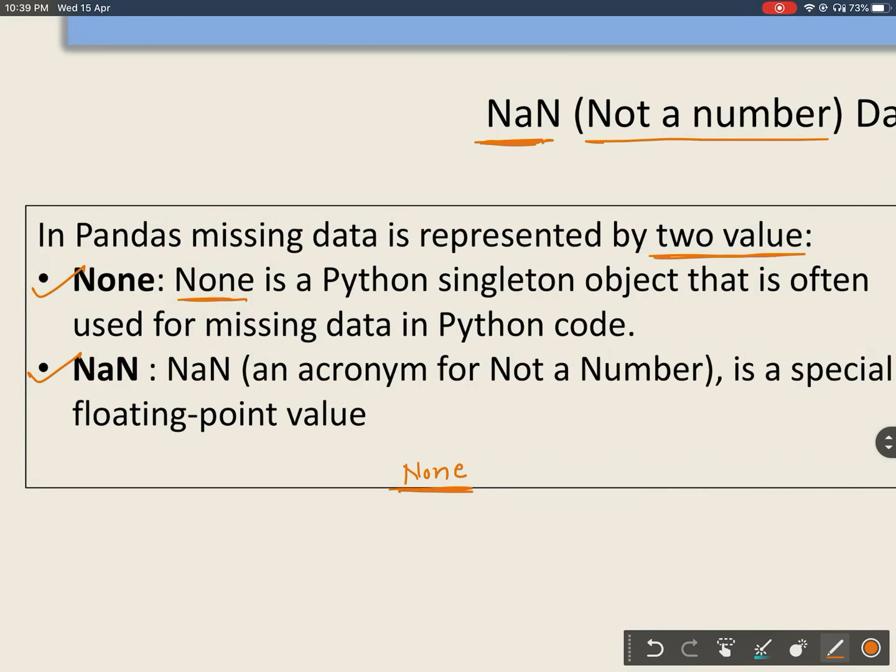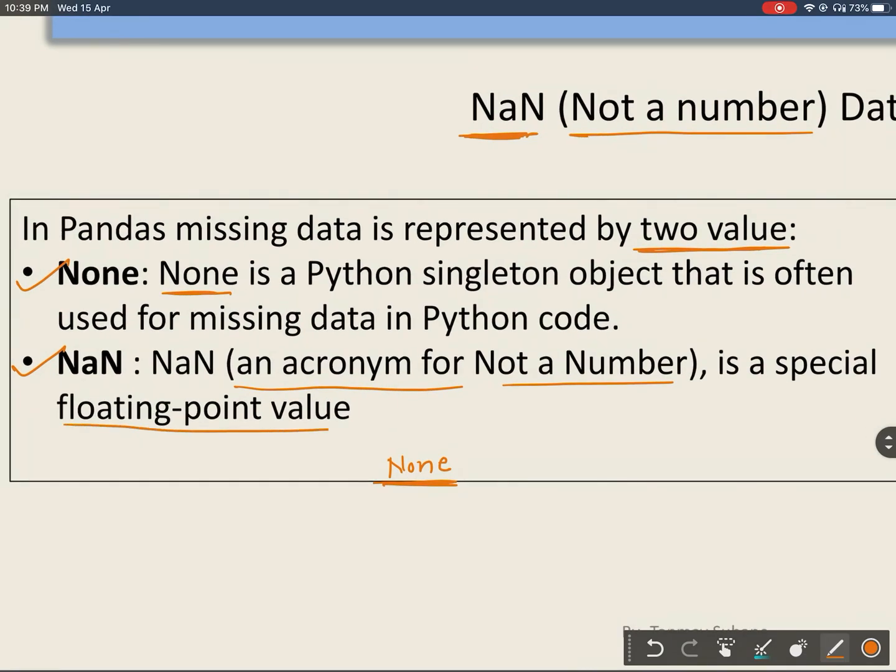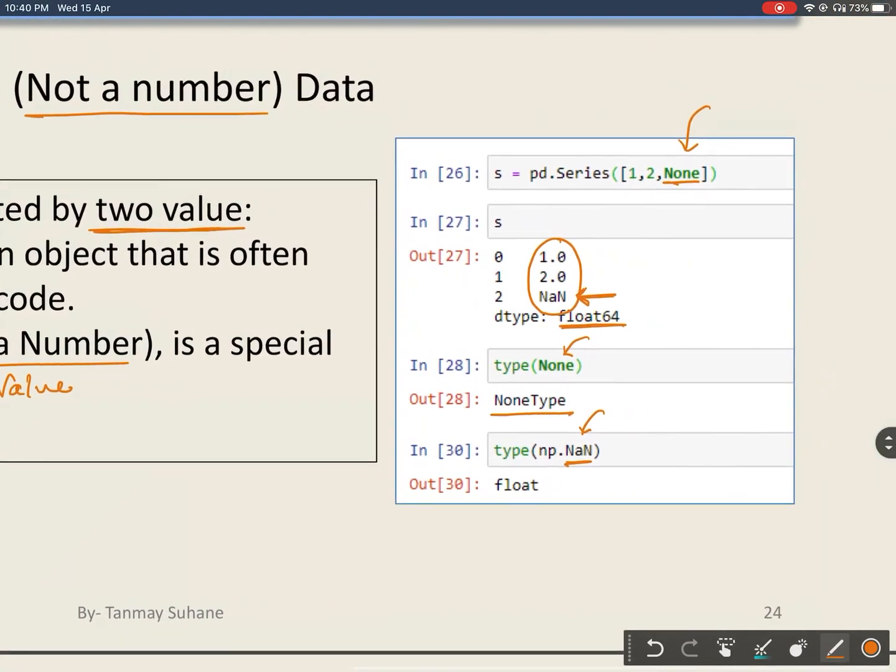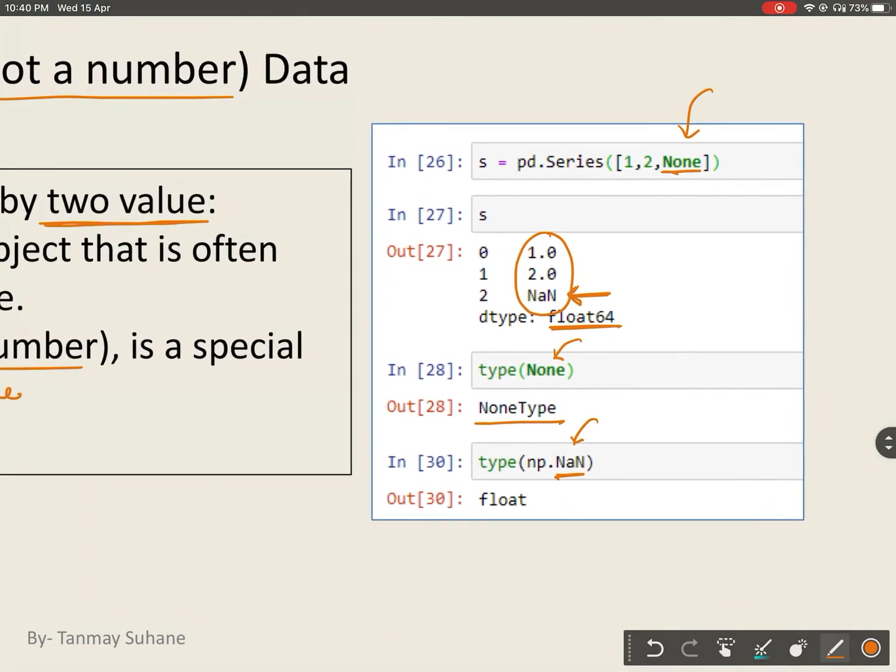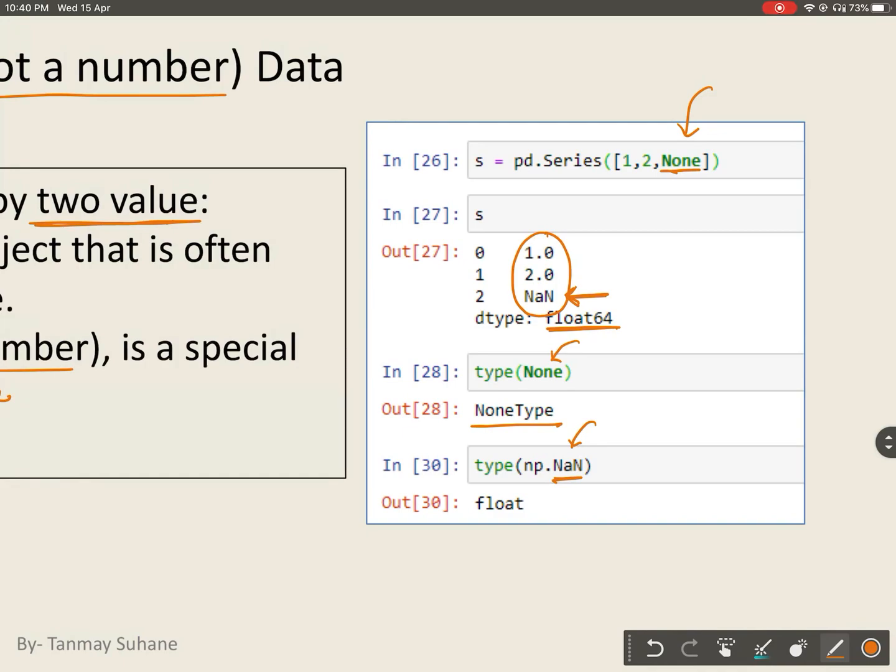And NaN, acronym for not a number, is a special floating point value which represents missing value. You can see this example and you can understand that NaN represents not a number and missing value.